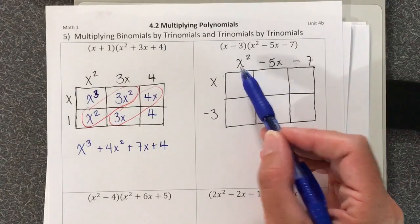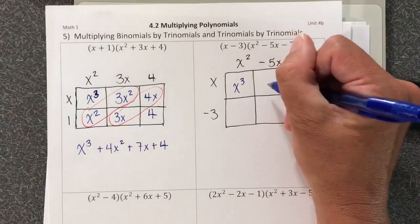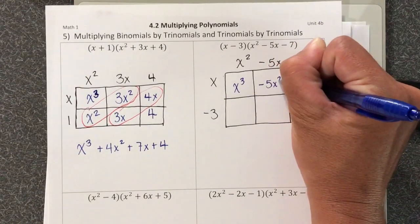So x times x squared is x to the third power. x times negative 5x is negative 5x squared.